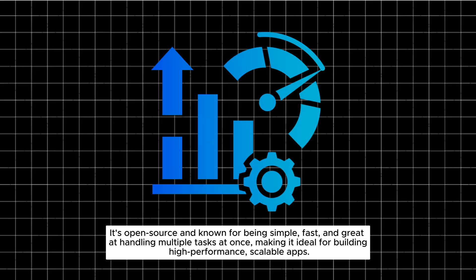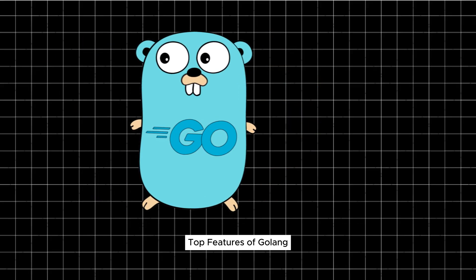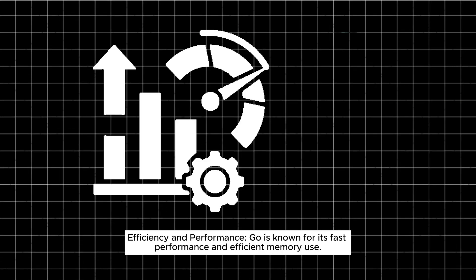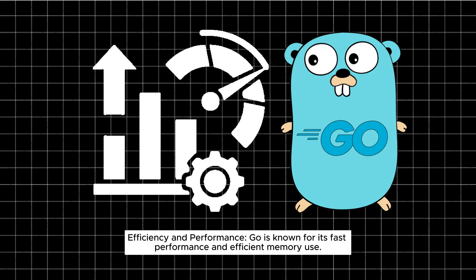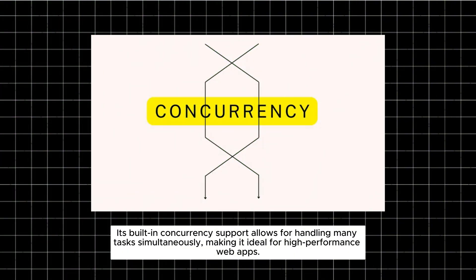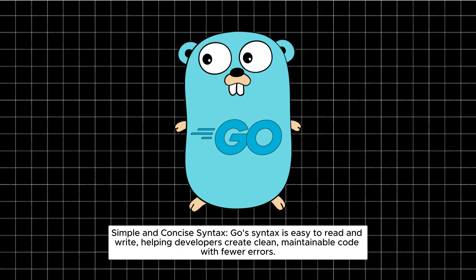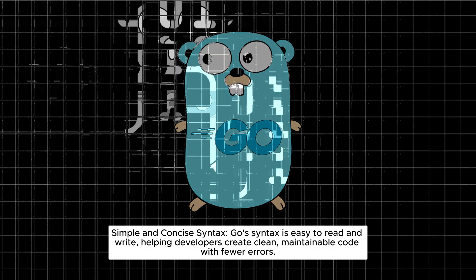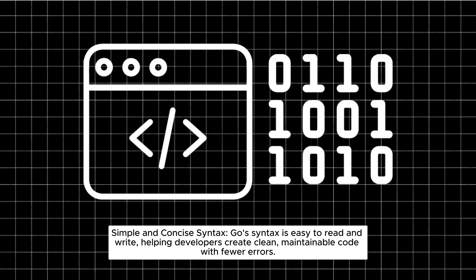Top features of Go: Efficiency and performance — Go is known for its fast performance and efficient memory use. Its built-in concurrency support allows for handling many tasks simultaneously, making it ideal for high-performance web apps. Simple and concise syntax: Go's syntax is easy to read and write, helping developers create clean, maintainable code with fewer errors.